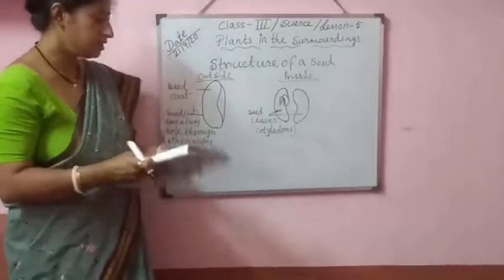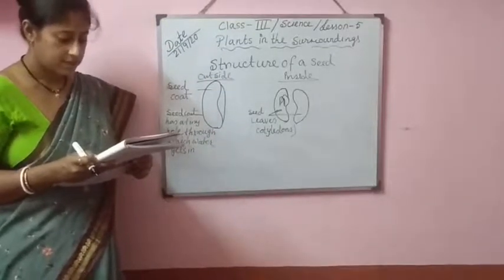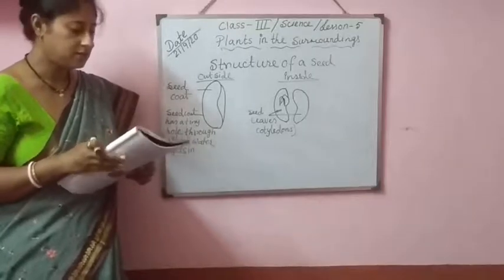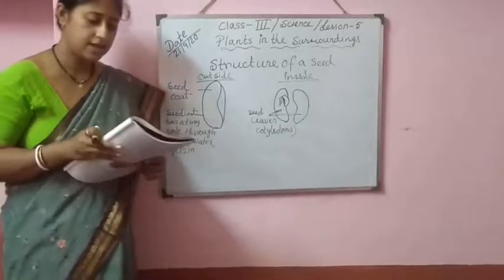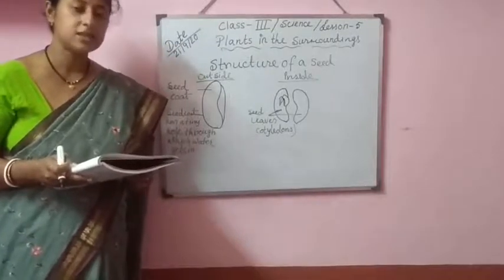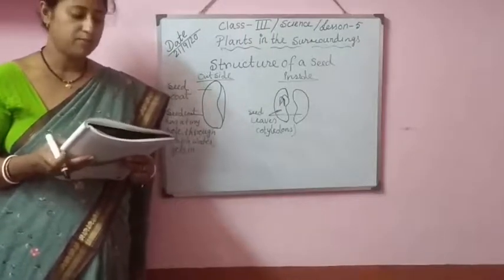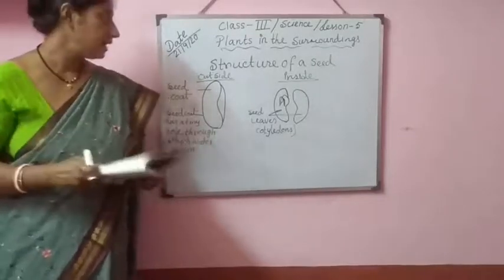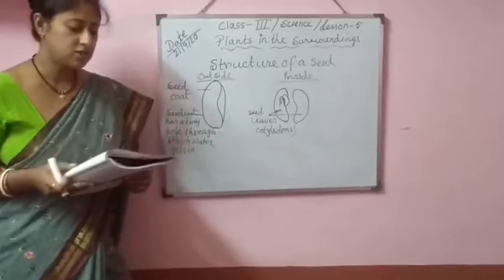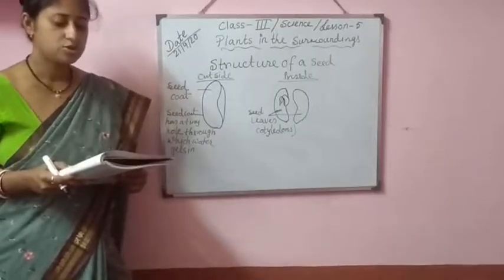Next point: cotyledons. The cotyledons are part of the embryo. They lie within the seed of a developing plant. These cotyledons store food for the new baby plant.